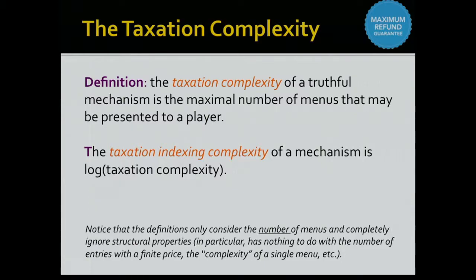Just to be clear: we only care about the number of menus that the truthful mechanism is presenting to the player. We don't care about the structure of the menus — we're not going to count the number of prices in the menu or anything like that. We're just going to count the number of distinct menus the player can see, as a function of the valuations of the others. Yes, you go over all possible valuations of the other players and count how many different menus arise.